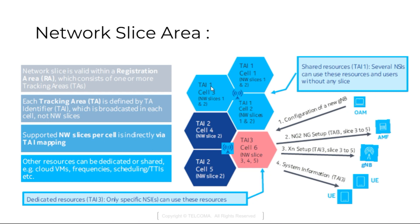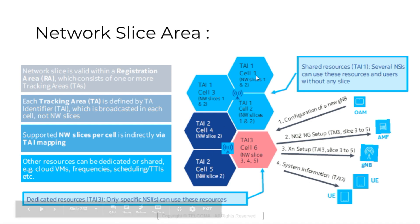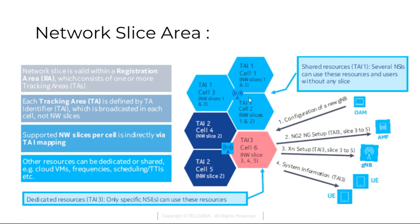For example, tracking area identifier 1 uses shared resources for slice 1 and slice 2. These are the slices and network slice configuration setup. Thank you.